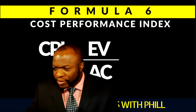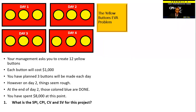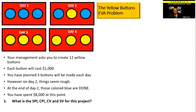So let's take a look at the CPI in the Yellow Buttons Problem. The problem says you're meant to manufacture three buttons a day for four days. Management asks you to create 11 yellow buttons, and each button will cost $1,000. You've planned three buttons will be made each day. However, on day two, things seem rough. At the end of day two, those colored blue are done, and you have spent $8,000 at this point.